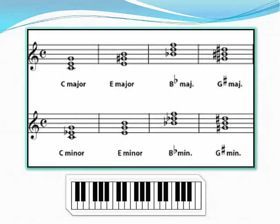We saw C minor in the previous slide — it has a minor third from C to E-flat. The E minor triad has a minor third from E to G. The B-flat minor triad has a minor third from the root to the third, which is B-flat to D-flat. In the last example, we have G-sharp minor. G-sharp to B is a minor third. I'll play this line of minor triads for you.